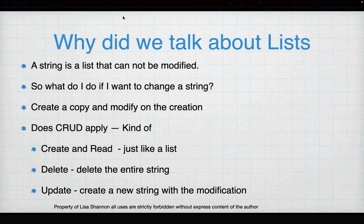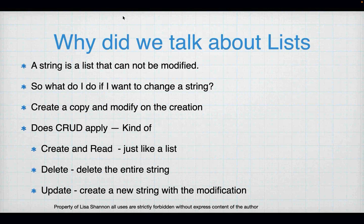Why did we talk about lists when we're here to talk about strings? Because a string is a kind of list — but it's a kind of list that can't be modified. That is what immutable means. You cannot modify a string in place. You have to use functions that Python provides that will copy and modify the string and return the result. CRUD applies to strings, but only kind of — you can create, read, and delete the entire string, but update means creating a new string with a modification.